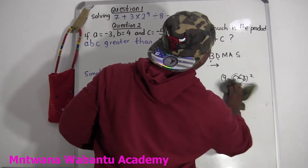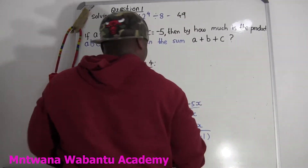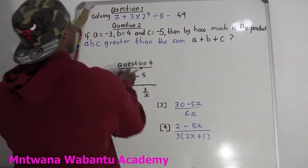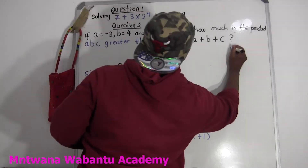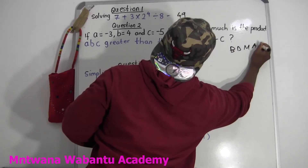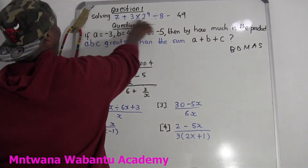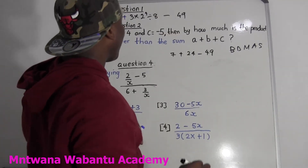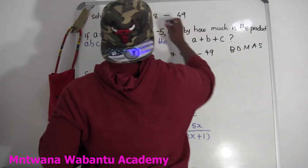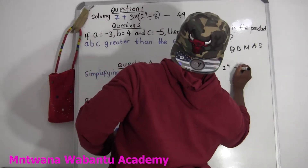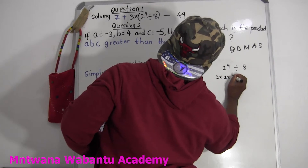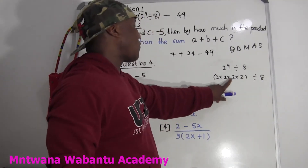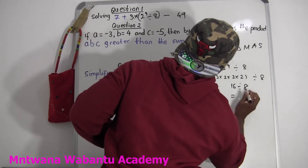So we're done with the first part. Now we continue simplifying. We continue with BODMAS. Bracket — we're done with the bracket. Now we go for division. Do we have a division here? Yes, we have. So what divided by what? It means 2 to the power of 4, divided by 8. What is 2 to the power of 4? It means 2 times 2 times 2 times 2, all divided by 8. 2 times 2 equals 4, times 2 equals 8, times 2 equals 16. So 16 divided by 8 equals 2.